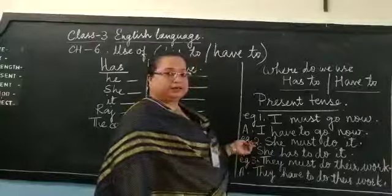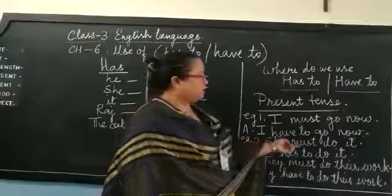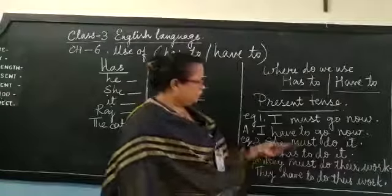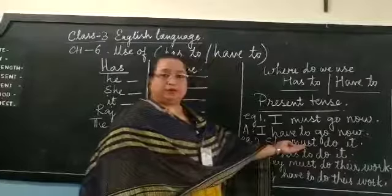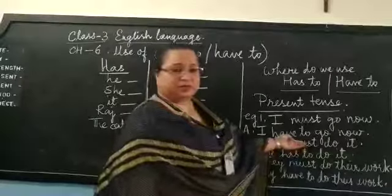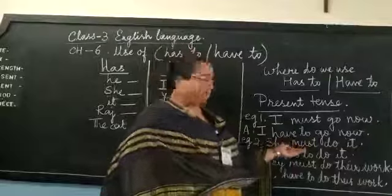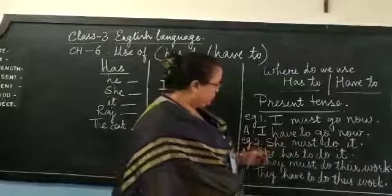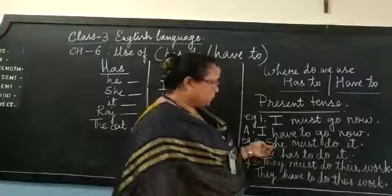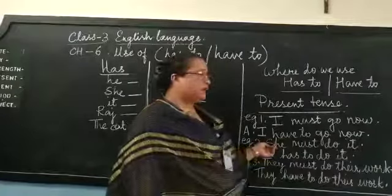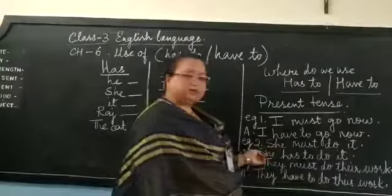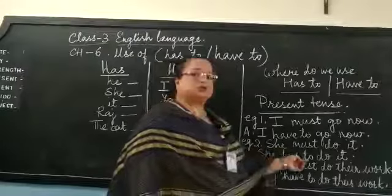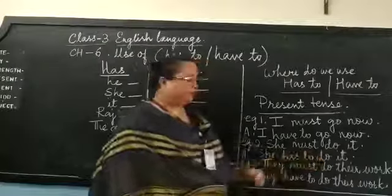Let us look at the second example: She must do it. Once again, we have must over here, and must tells us that it is necessary for her to do the work. Since the sentence is starting with she, we use has to. So the answer is: She has to do it.